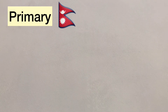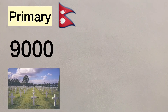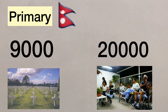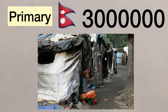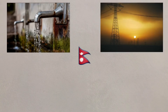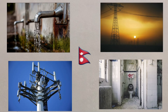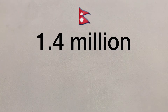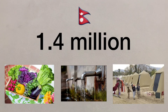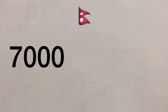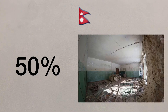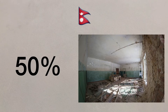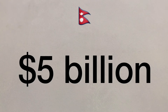In Nepal the primary effects included around 9,000 people being killed and 20,000 injured with over 8 million people being affected. 3 million people were left homeless when their homes were destroyed. Water and electricity supplies, sanitation and communications were affected. 1.4 million people were in need of food, water and shelter in the days after the earthquake. 7,000 schools were destroyed and hospitals were overwhelmed with the injured. 50% of shops were destroyed, affecting food supplies along with people's livelihoods. The cost of the damage was estimated at over 5 billion US dollars.